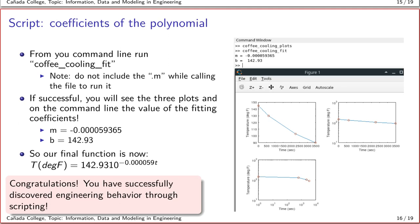Once you do this, go ahead and run coffee_cooling_fit. If you're successful, you should see the three plots appear and also the m and b values printed out. That means your final function now is given by this exponential behavior as described here. Congratulations—at this point you have successfully discovered an engineering behavior through Octave scripting process.